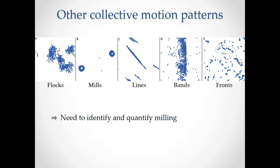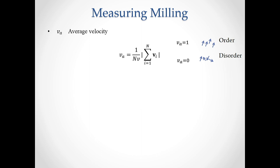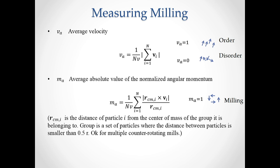Varying a few parameters of the model, we not only obtain mills but also other patterns of collective motion like flocks, lines, bands, and fronts. Therefore, we need a way to identify, quantify, and measure milling. We can use the average velocity — the polar order parameter — which is one when particles are ordered and zero when particles are disordered. And we can use the average absolute value of the normalized angular momentum, which is one when particles are milling.